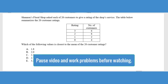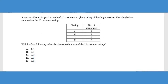In this first question, Shannon's Floral Shop asked each of 20 customers to give a rating on the shop service. The table below summarizes the 20 customer ratings — six customers gave a rating of three, eight gave a rating of two, and so forth. It asks which value is closest to the mean. Remember that mean is just a fancy way of saying average. This is what we call a frequency table. Sometimes you'll see frequency tables throughout the ACT used from an averaging standpoint, and sometimes they'll give you the frequency as a histogram graph.